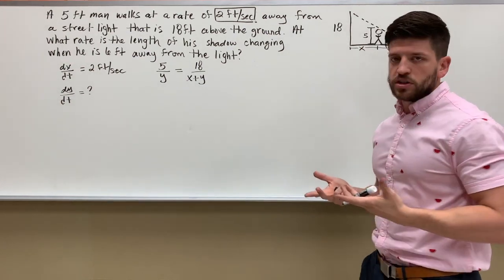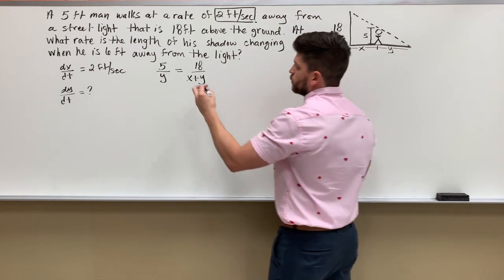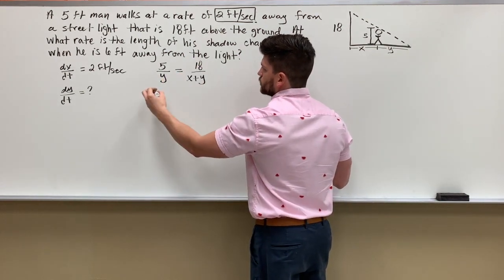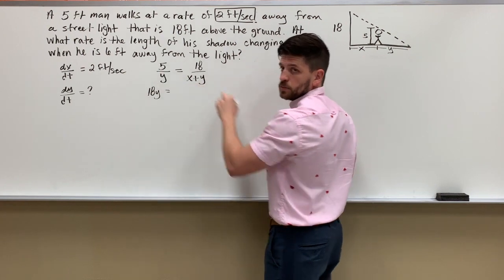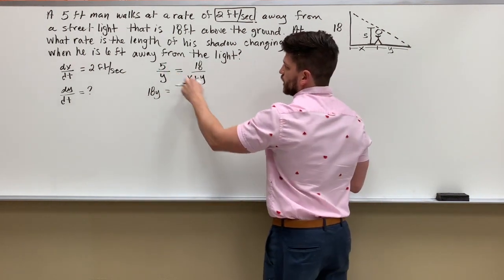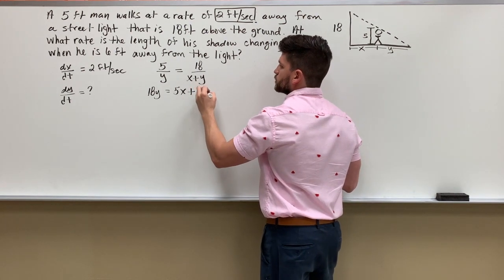So here is my equation that's going to get me to the rate I want to find. So I have a proportion, so I can cross multiply. So I have 18y equals 5 times (x plus y), so I've got to multiply 5 by both of those variables. So it's going to be 5x plus 5y.